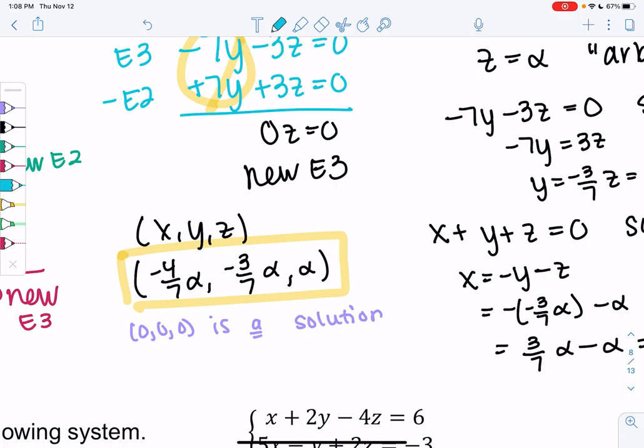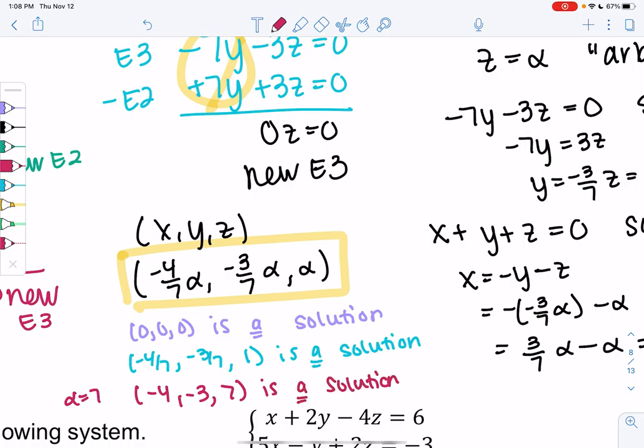Let's say alpha is 1, so that means negative 4/7 times 1, negative 3/7 times 1, and 1 is a solution. We could keep going, plug in 2, plug in 3. Let's plug in 7, because that's an easy choice. If alpha is 7, we get negative 4 because the 7ths cancel, negative 3, and 7. This is a solution.